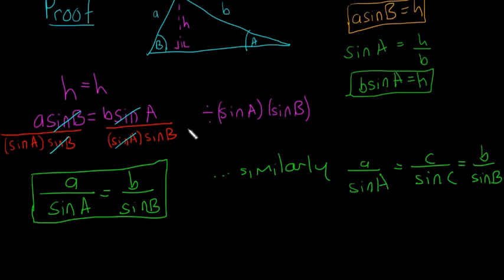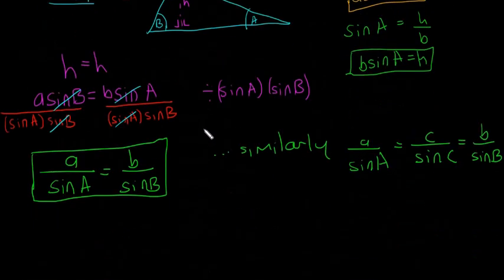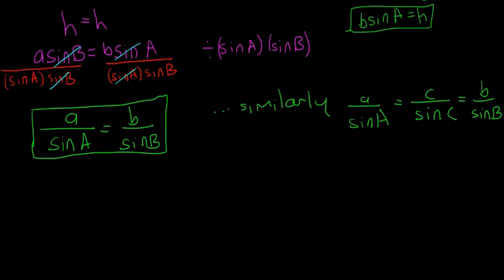It'll all work out the same in the end. So that's the quick proof, and I'll just go through some of the rules of using it. So you can use it in this form as it is. A over sine A is equal to C over sine C is equal to B over sine B. You generally use that if you want to find the side, so a, b, or c.